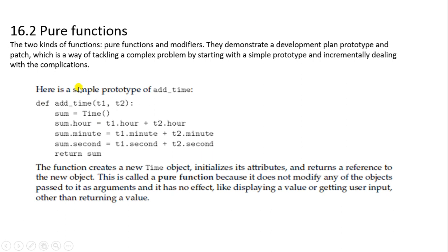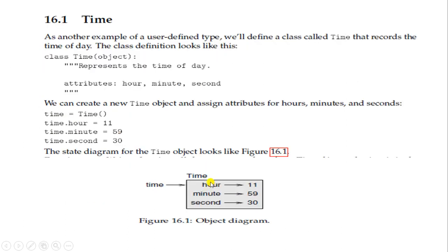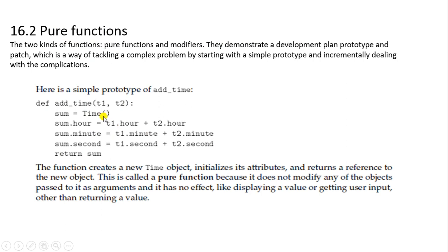Here is the example of the function named add_time. The function def add_time takes two values t1 and t2. Inside sum, we are storing a Time object. The Time object already has three attributes: hour, minutes, and seconds. Whatever the value of t1, we are passing it as an argument. t1.hour plus t2.hour is stored inside sum.hour.